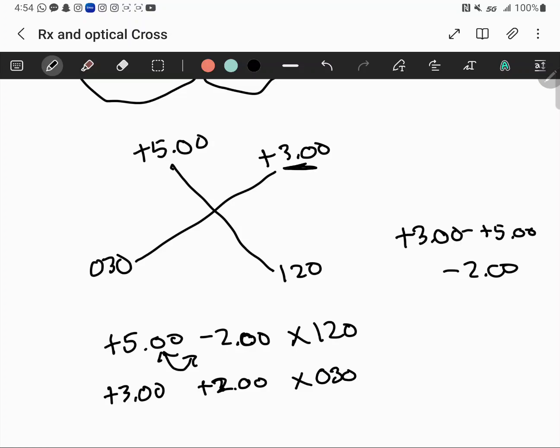As you can see, this plus 3 we have up here is now our sphere power, and the 30 is now the axis for that prescription. These are both their own individual sphere powers, but they only show up on the Rx depending on if it's written in plus cylinder or minus cylinder form.